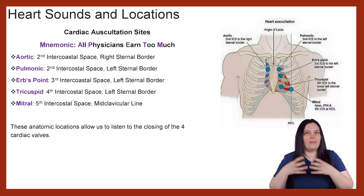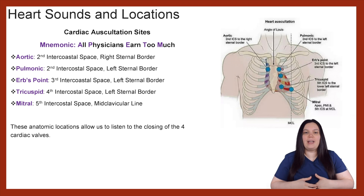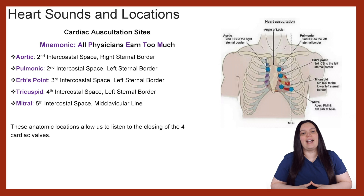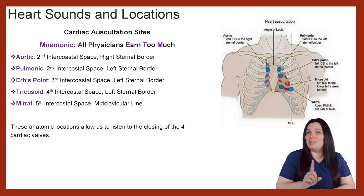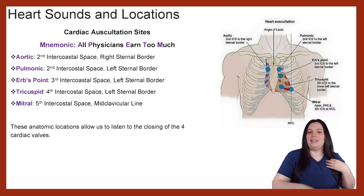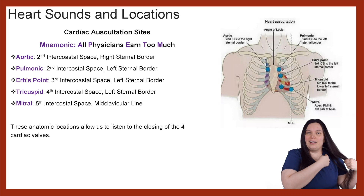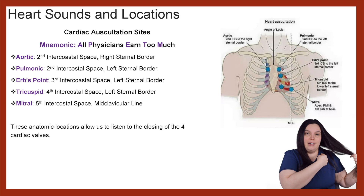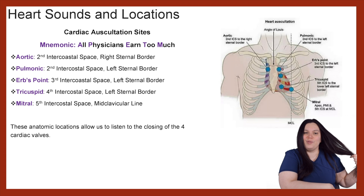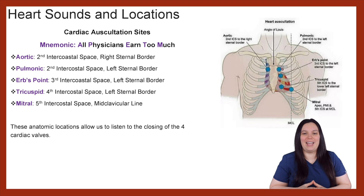Then we have our tricuspid valve, heard at the fourth intercostal space, left sternal border. And lastly, our mitral valve is at the fifth intercostal space, but this one is at the mid-clavicular line. So you have your clavicle, take the middle of that, and go straight down to your fifth intercostal space.